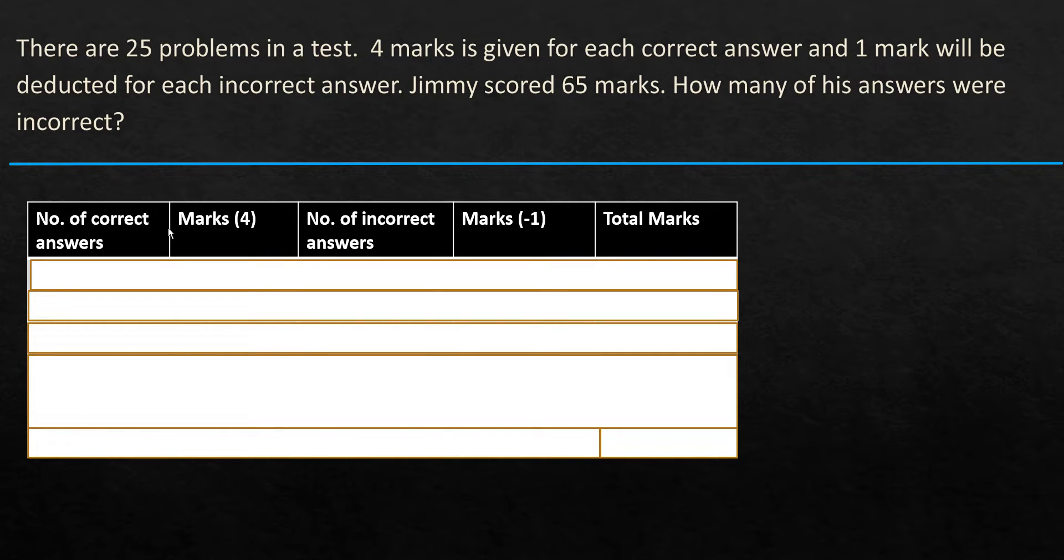The columns of the table are number of correct answers and the marks that is awarded for each correct answer. As you have seen here, 4 marks is given for each correct answer, so it's 4. And number of incorrect answers, and for every incorrect answer, 1 mark will be deducted, so it is minus 1. And then we put in the total marks.